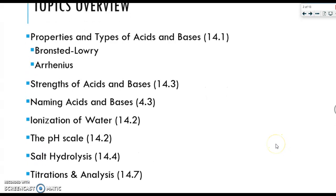We're going to talk about some basic properties and types. We're going to define some terms, Bronsted-Lowry's definitions, the Arrhenius definitions. We're going to discuss strengths of acids and bases. We're going to name them. We're going to then discuss the ionization of water, the pH scale, salt hydrolysis, as well as titrations and analysis.